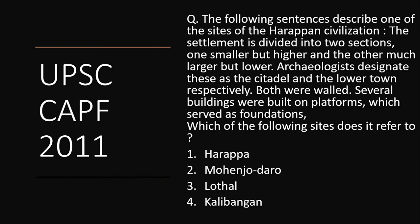There was a question in UPSC CAPF 2011 presenting a paragraph describing a Harappan site: 'The settlement is divided into two sections, one smaller but higher, and the other much larger but lower — the citadel and the lower town respectively. Both were walled, and several buildings were built on platforms serving as foundations.' This directly refers to Mohanjodaro. Answer: option 2, Mohanjodaro.